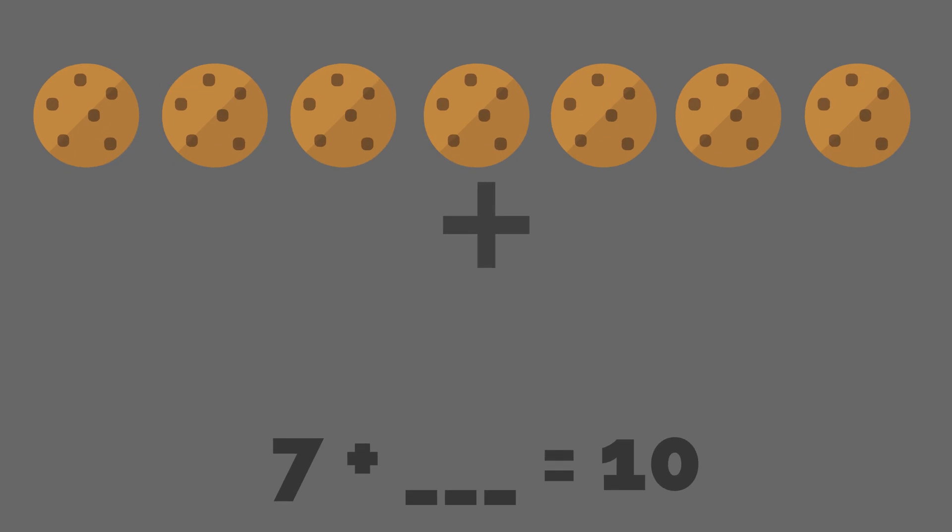7 cookies plus dash equals 10. 3. 7 plus 3 is equal to 10. Hmm... 7, 8, 9, 10. The missing number is 3.